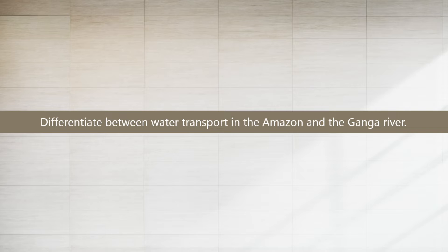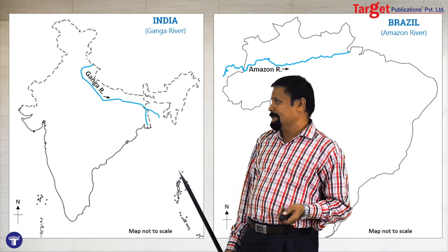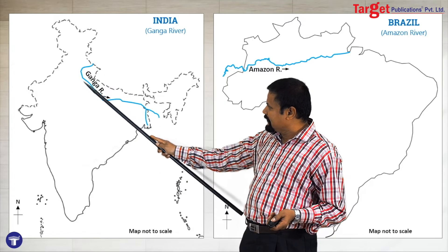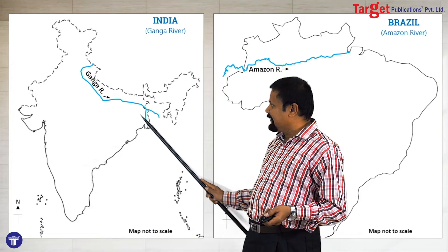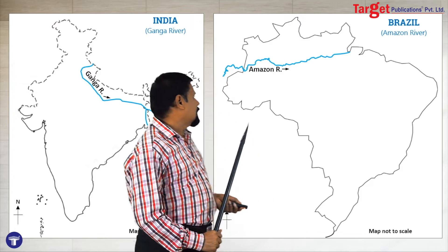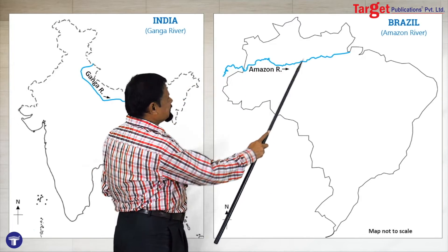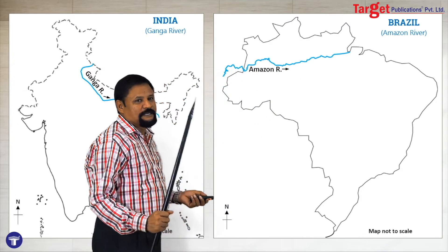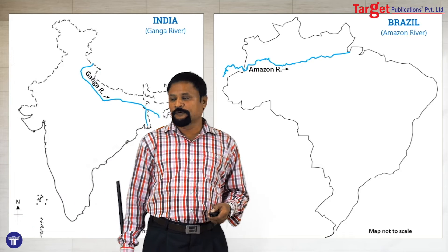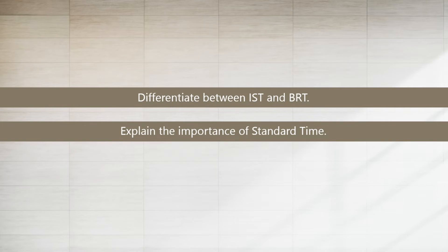For waterways, show the Ganga River in India and the Amazon River in Brazil, then make a comparative note.